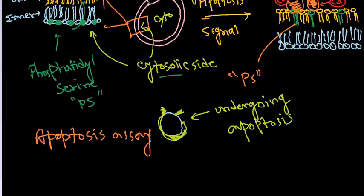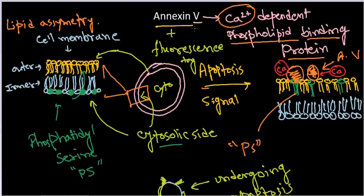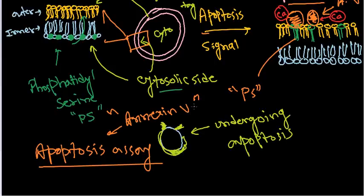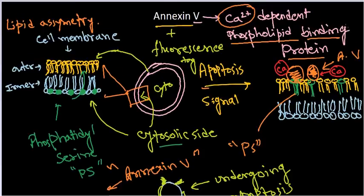So you may wonder about what is this apoptosis assay — we can use Annexin V as a molecule for the apoptotic assay. As the cell undergoes apoptosis, the Annexin V will bind and as it is fluorescently tagged, we can actually visualize them under a microscope. That is called the Annexin V assay and it can act as the apoptosis assay. That is a very brief overview about the apoptotic assay and Annexin V, and I hope that is helpful. Thank you.